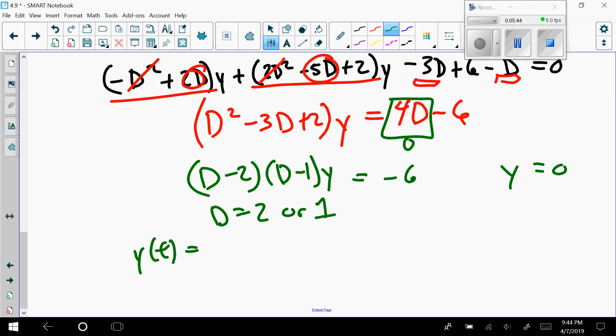Oh, but it's supposed to be y of the homogeneous plus the particular. And because of this negative 6, I have to worry about it. So I found these which belong to the homogeneous: that'd be c₁e^(2t) plus c₂e^t.